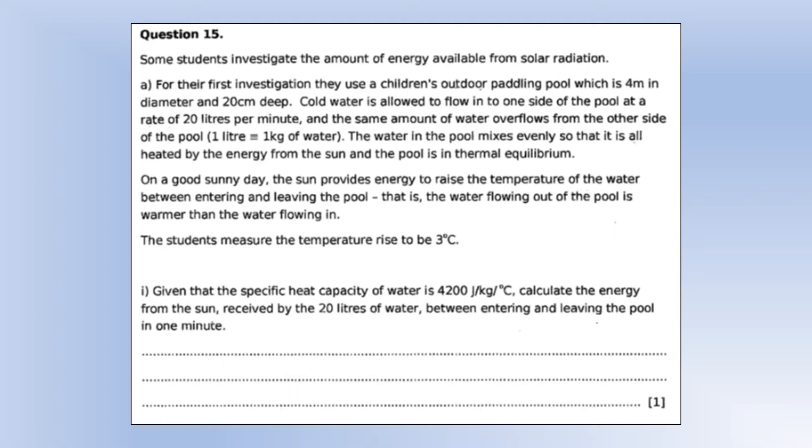Some students investigate the amount of energy available from solar radiation. For their first experiment, they used a child's outdoor paddling pool, which is 4 meters in diameter and 20 centimeters deep. Cold water is allowed to flow into one side of the pool at a rate of 20 liters per minute, and the same amount of water overflows from the other side, so 20 liters per minute. The water in the pool mixes evenly, so it's all heated by the energy from the sun and the pool is in thermal equilibrium. And that just means it's all at the same temperature. On a good sunny day, the sun provides energy to raise the temperature of the water entering and leaving the pool. The students measure a temperature rise of 3 degrees Celsius. Given the specific heat capacity is 4200, calculate the energy from the sun received by the 20 liters of water between entering and leaving it. That's a lot of information to do a Q equals MC delta T calculation. We've got 20 liters, which is 20 kilograms, and then we've got a 3 degree temperature change. It gives us our energy.